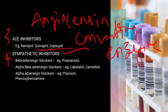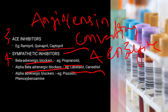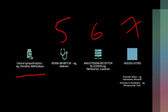Sympathetic inhibitors are classified into four types: first, beta-adrenergic blockers — example propranolol and metoprolol; second, alpha-beta-adrenergic blockers — example labetalol and carvedilol; third, alpha-adrenergic blockers — example prazosin, phenoxybenzamine, terazosin, and doxazosin; fourth, central sympatholytics — example clonidine and methyldopa.